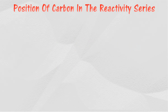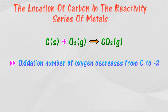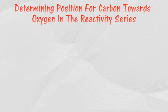Carbon's position in the reactivity series: even though carbon is a nonmetal element, it can combust in excess oxygen to form carbon dioxide. Oxygen is reduced to oxide ions, and the oxidation number decreases from zero to negative two. Carbon can act as a reducing agent to reduce a metal oxide to its metal, while the metal oxide acts as the oxidizing agent to oxidize carbon to carbon dioxide.